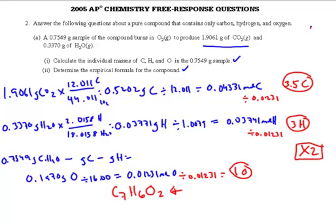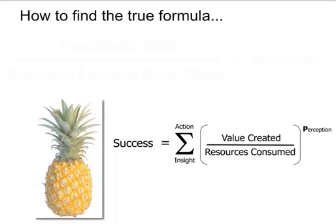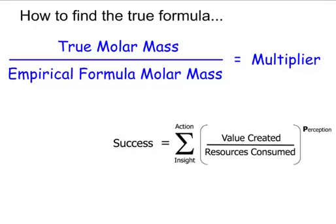And that's how you do one of these combustion problems. Now, how do you find the true molecular formula? You take the true molar mass and divide it by the empirical formula molar mass — that gives you a multiplier. If your true molar mass equals your empirical formula molar mass, the multiplier is 1 and you're done. If the multiplier is 2, you take all your atoms and multiply everything by 2.